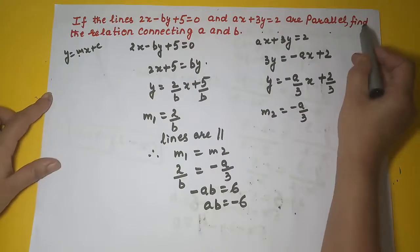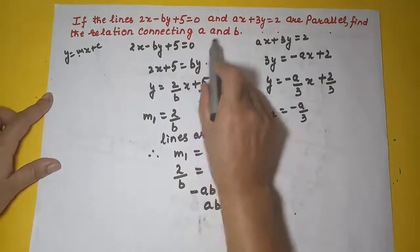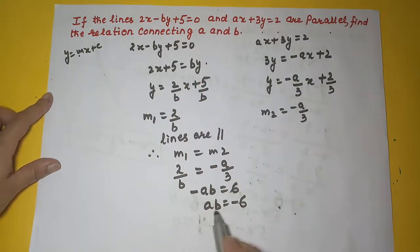That's what he wanted us to find. He wanted us to find the relation connecting a and b. So the product of a and b is minus 6.